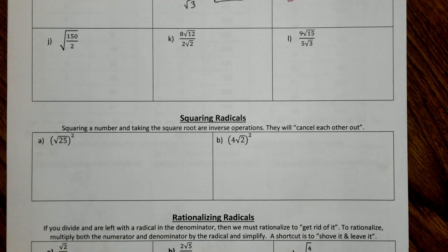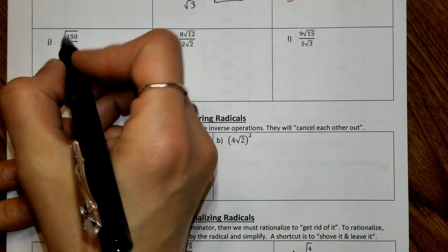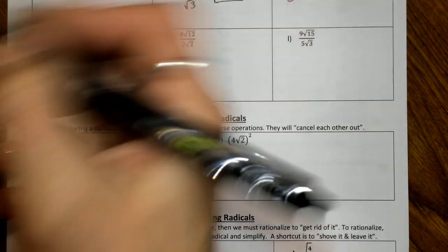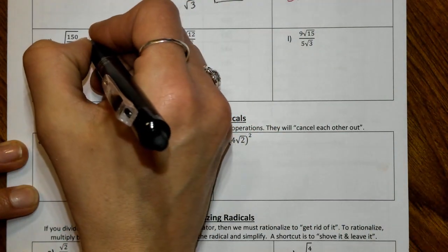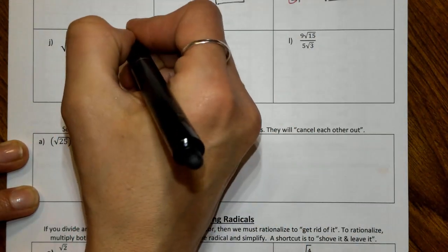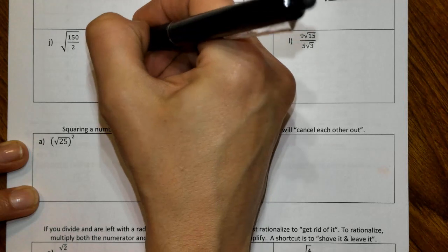All right, so with J, all we need to do here is take 150 and divide 150 by 2, and we're going to wind up with the square root of 75. Again, we're going to have a not simplified, so we need to simplify this.